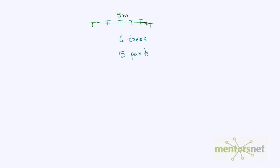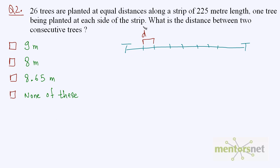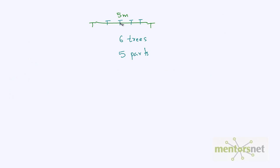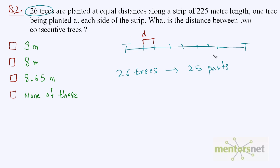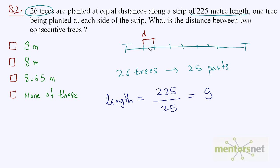Of those 6 trees, 2 are on each side of the strip. So planting 6 trees gives 5 parts. Similarly in our question, planting 26 trees gives 25 parts. The length of the strip is 225 meters divided into 25 parts, so the length of each part is 225 divided by 25, which equals 9. Therefore the distance between 2 trees is 9 meters, and the answer is option 1.